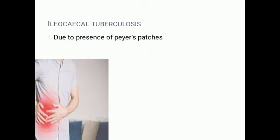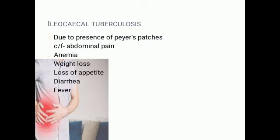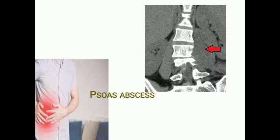Moving on to the ileocecal junction, the most common pathology is ileocecal tuberculosis, due to the presence of Peyer's patches and their close affinity. The clinical features involve abdominal pain, anemia, weight loss, loss of appetite, diarrhea, and fever.